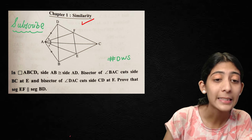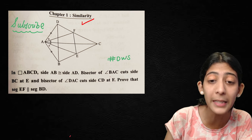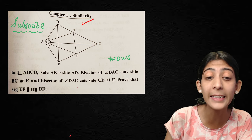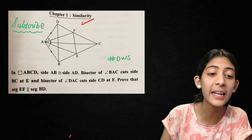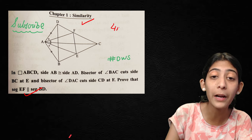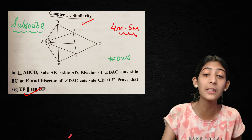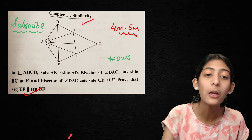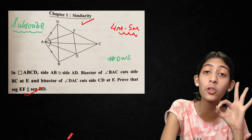In parallelogram ABCD, side AB is congruent to side AD. The bisector of angle BAC cuts side BC at E and the bisector of angle DAC cuts side CD at F. Prove that segment EF is parallel to segment BD. This question is worth 4–5 marks in the Maths 2 paper. The question level is very tough and can come from the notebook. Note it down.